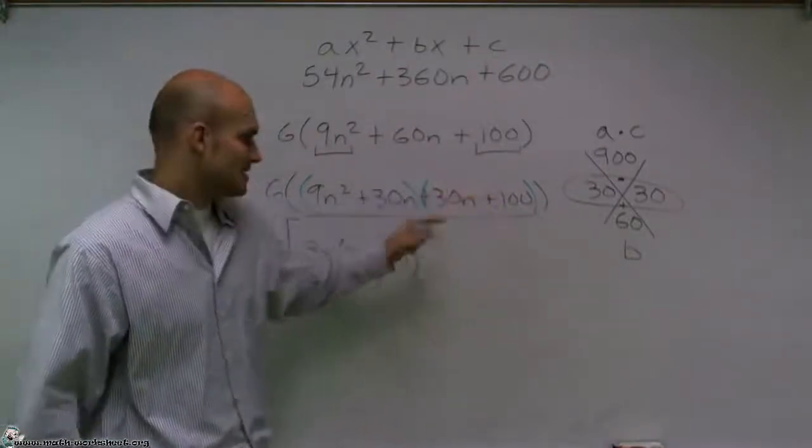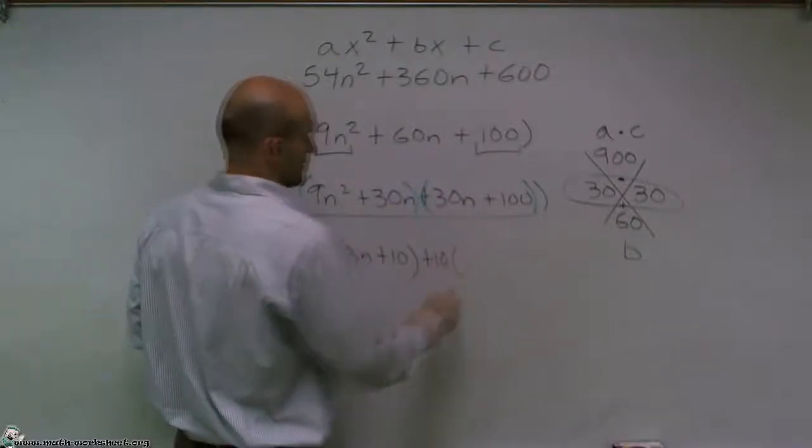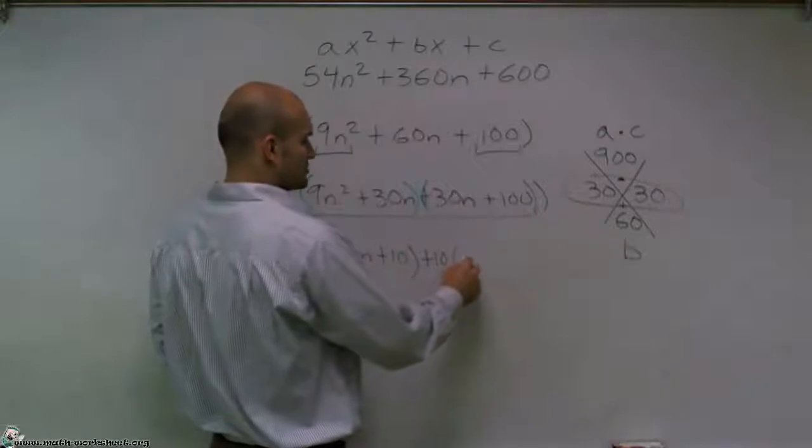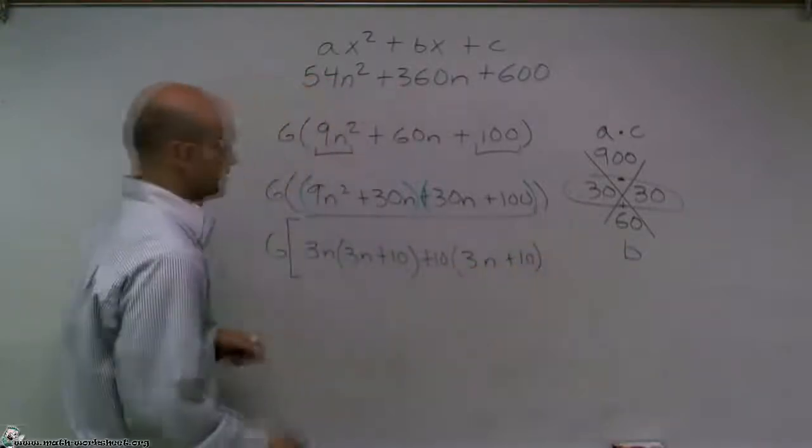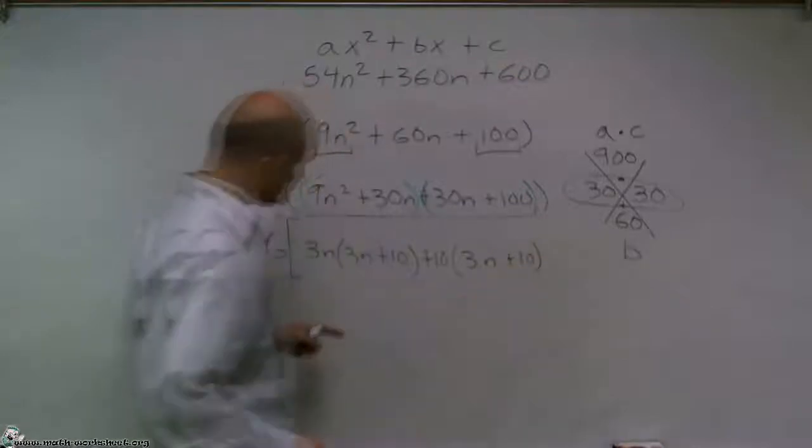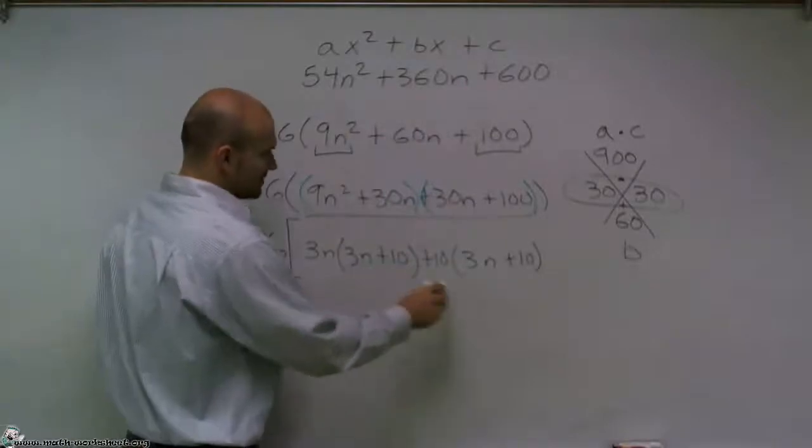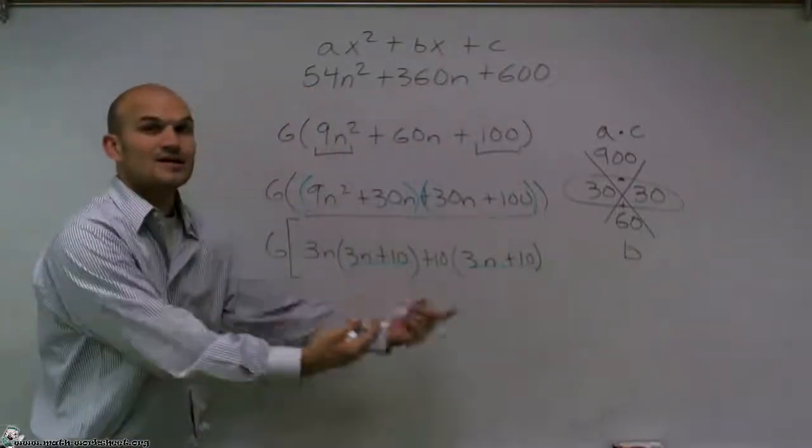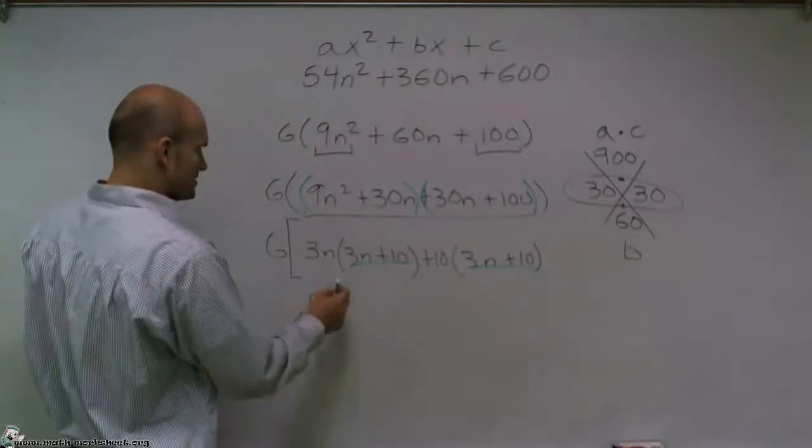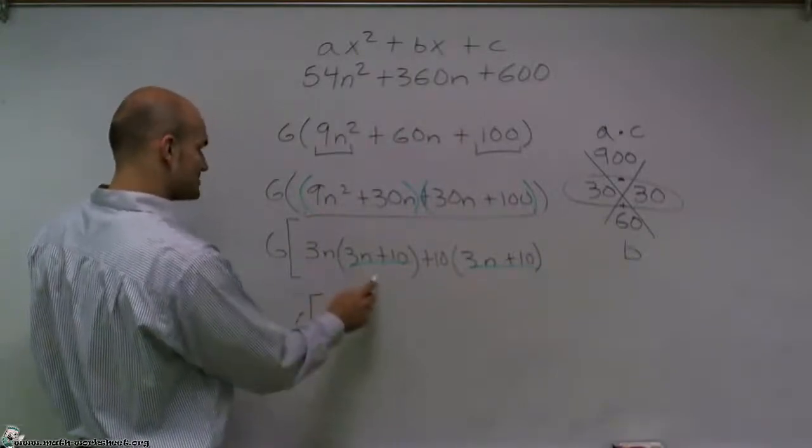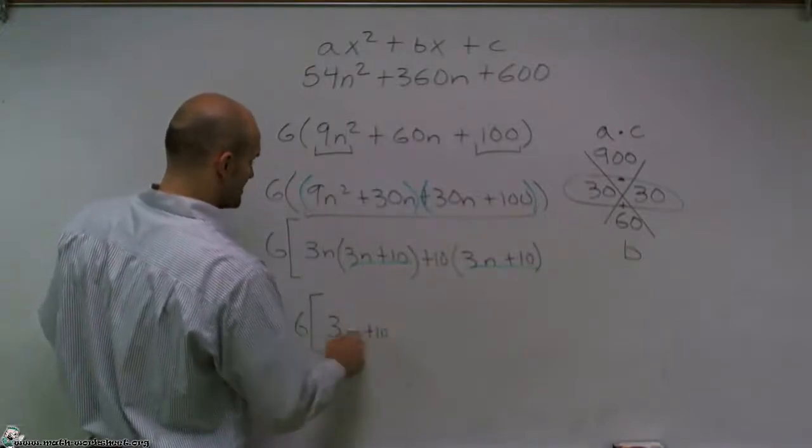Here, what can I factor out? Well, I can factor out a positive 10. And then what I'm left over with is going to be, again, a 3n plus 10. Now, what I notice, what can I factor out of these two terms? Well, you notice that 3n plus 10 and 3n plus 10 are the same, so now I can factor that out. So my final answer is going to be 6 times a 3n plus 10 times a 3n plus 10.